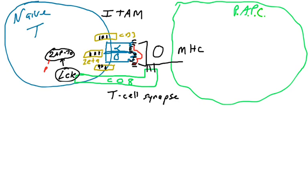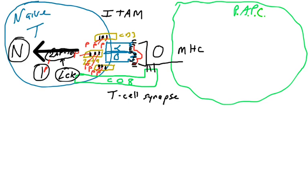These tyrosines in the ITAMs are normally unphosphorylated, but once the T-cell synapse forms, the LCK kinase activates ZAP-70, which as a tyrosine kinase phosphorylates the tyrosines found in the ITAMs. Once these tyrosines become phosphorylated by ZAP-70, that signals a chain reaction of signal transduction that goes into the nucleus. This is the first signal that activates a T-cell — the phosphorylation of ITAMs triggered by the T-cell synapse forming. However, there's another layer of signal needed; we can't let the T-cell activate on this signal alone.